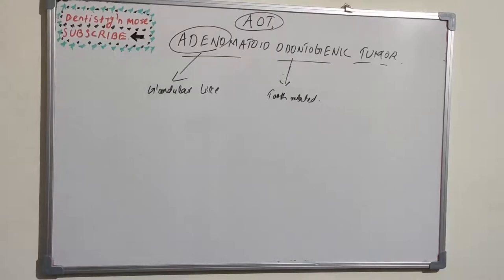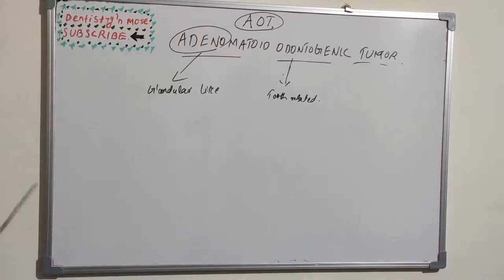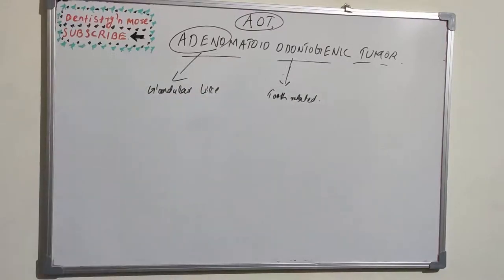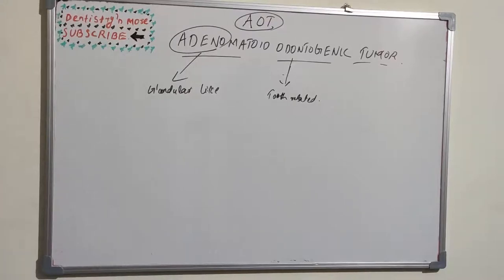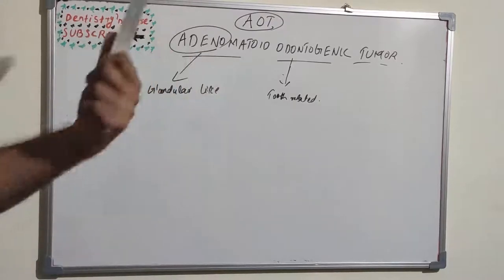Hello everyone, welcome back to my new session on dentistry and more. Today we have a different tumor: Adenomatoid Odontogenic Tumor, or AOT. Last class we covered CEOT — Calcifying Epithelial Odontogenic Tumor. From the name itself we get an idea about the tumor. 'Odontogenic' is clearly related to tooth or tooth-forming tissues.